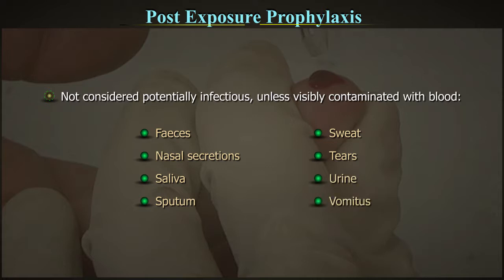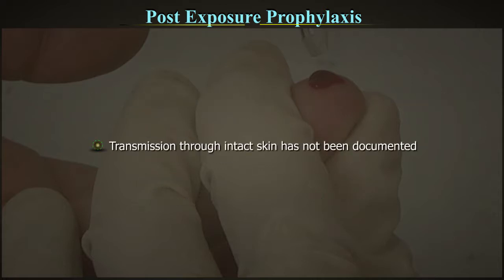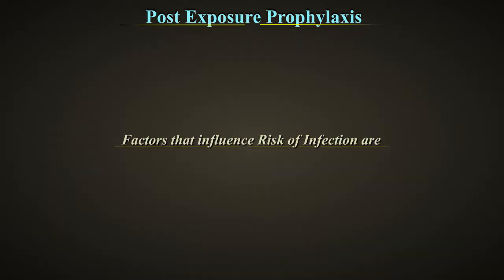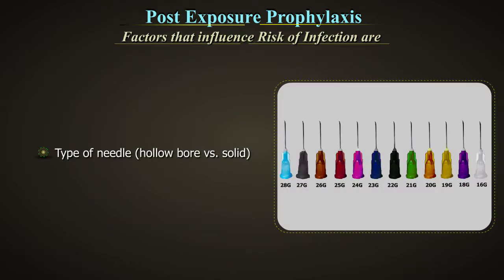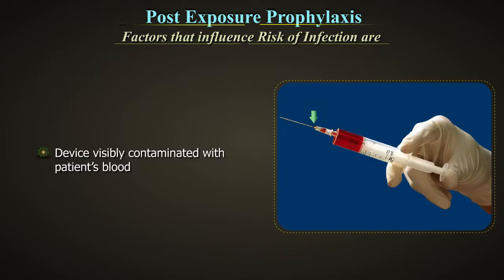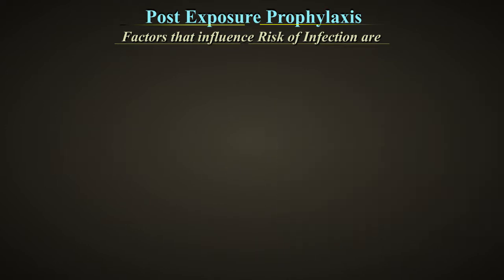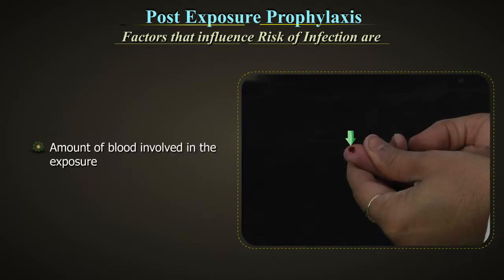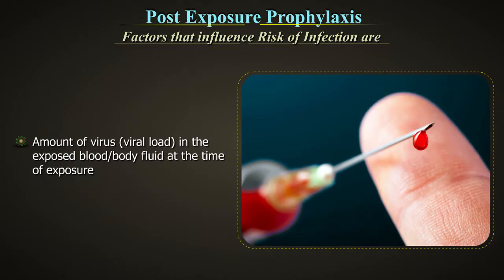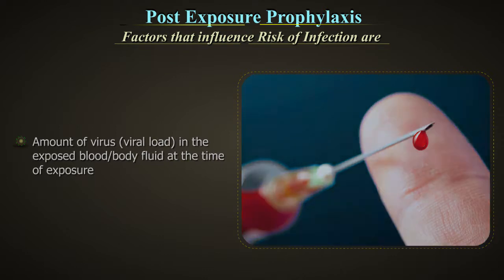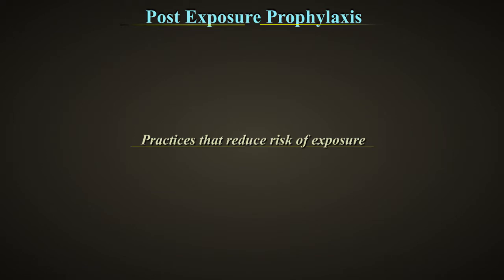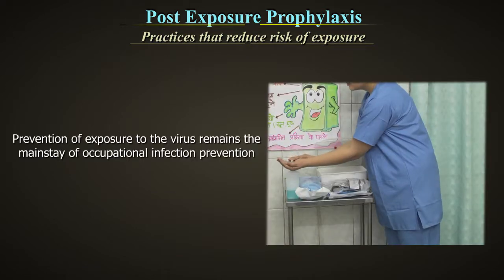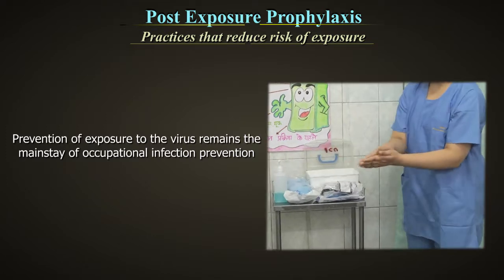Factors that influence risk of infection are: type of needle — hollow bore vs. solid — device visibly contaminated with patient's blood, depth of injury, the amount of blood involved in the exposure, the amount of virus or viral load in the exposed body fluid at the time of exposure, and timely availability and efficacy of PEP.